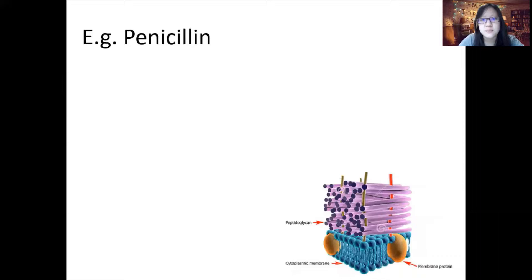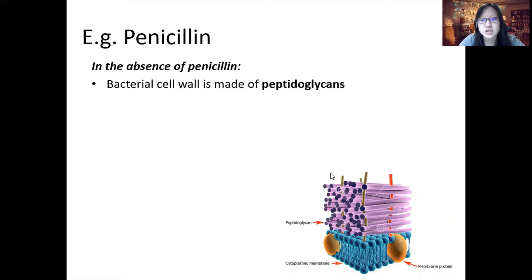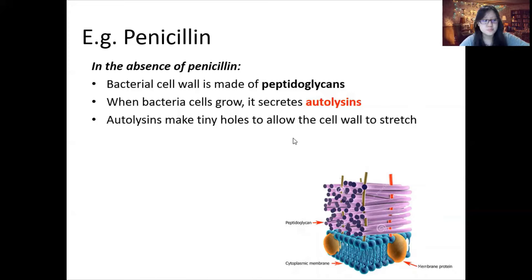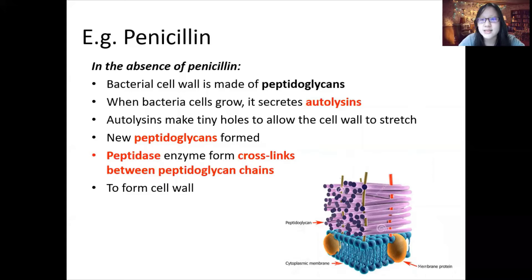Let's look at penicillin and how it works in particular — this is something you need to know for exams. In the absence of penicillin, the bacterial cell wall is made of peptidoglycans, which are made of sugar and amino acids. When bacterial cells grow, they secrete autolysins that make tiny holes to allow the cell wall to stretch. New peptidoglycans then form across those holes, and crosslinks are formed by the peptidase enzyme to reinforce the cell wall — making the bacteria bigger in size.